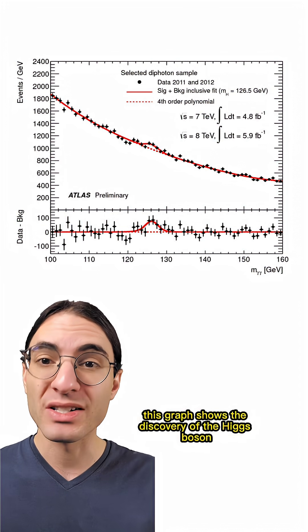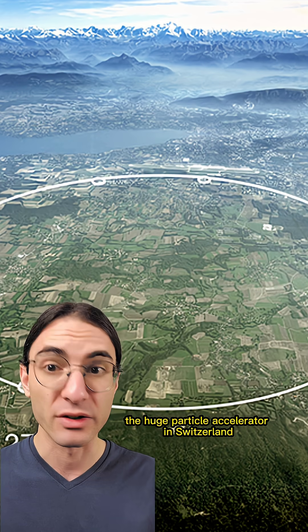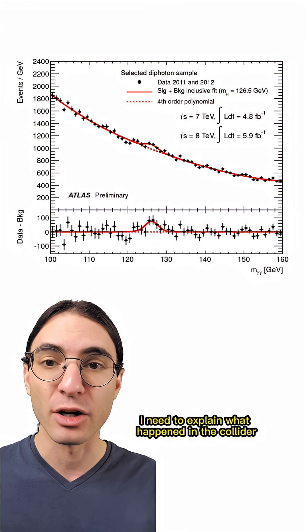Anyway, this graph shows the discovery of the Higgs boson by the Large Hadron Collider, the huge particle accelerator in Switzerland. To understand what we're looking at, I need to explain what happened in the collider.